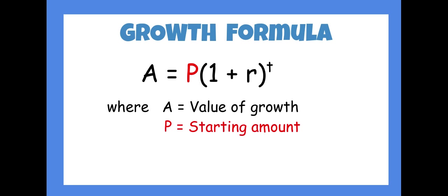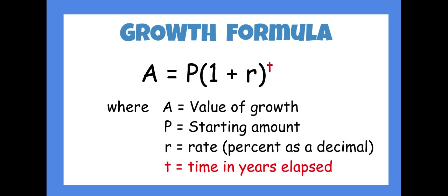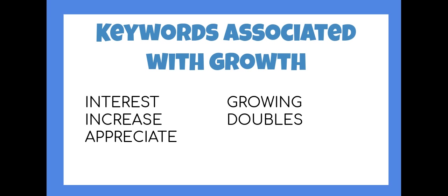The r is your rate, which is your percent, but we always put it as a decimal. Your t is your years in elapsed time - sometimes it does fluctuate, but generally speaking it's time in years.